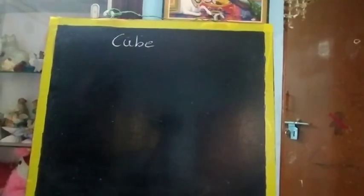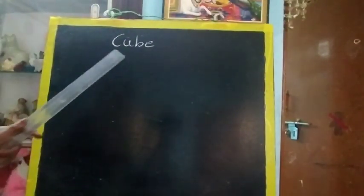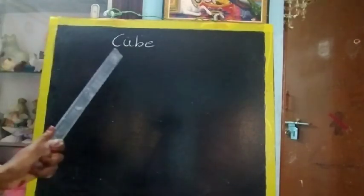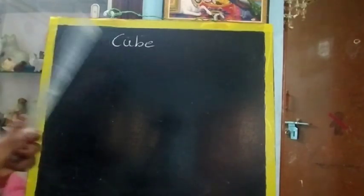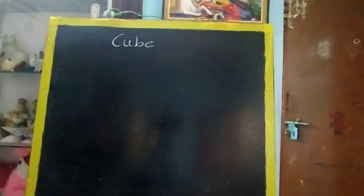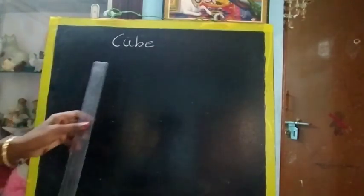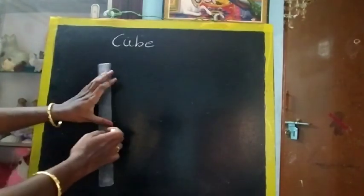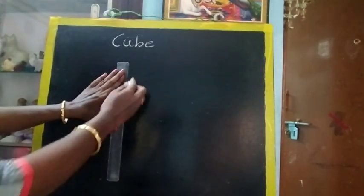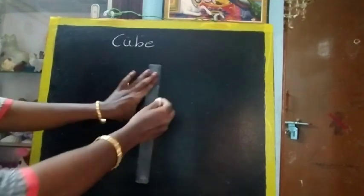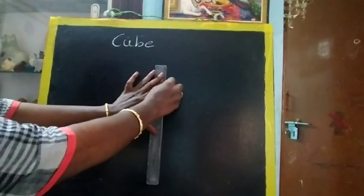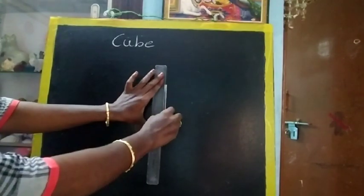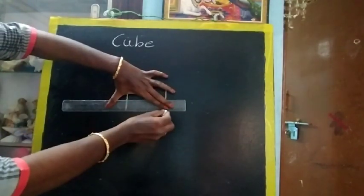Now we have learnt about 3D shapes. So today we are going to learn how to draw cube and cuboid. Every day we will learn 2 shapes. You know this already from last year, but let's revise. First thing, you have to draw a square. So follow the steps — draw a square. You can pause the video and do it along.